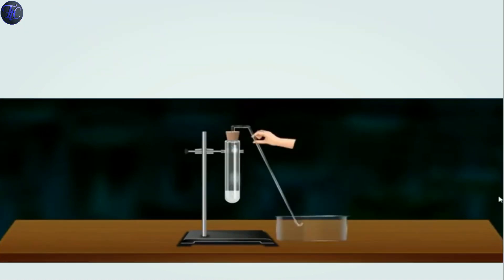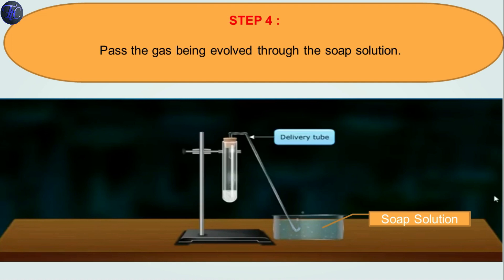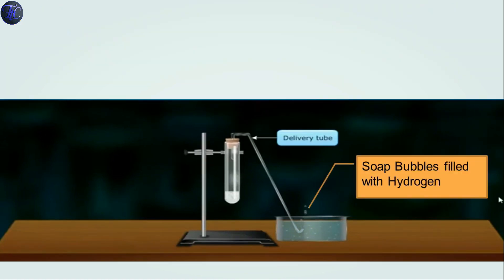After that, put one end of the delivery tube in the test tube and the other end in the tub. Now add the soap solution in the tub. Pass the gas being evolved through the soap solution. What we will observe here is that soap bubbles filled with hydrogen are formed.